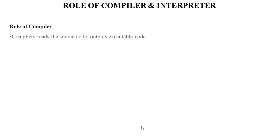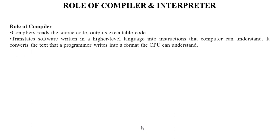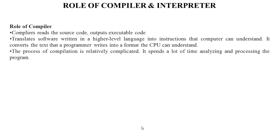The role of a compiler: the compiler reads the source code and outputs executable code. The executable result is some form of machine-specific binary code. It translates software written in a higher-level language into instructions that a computer can understand, that is low-level language. It converts the text that a programmer writes into a format the CPU can understand. The process of compilation is relatively complicated and it spends a lot of time analyzing and processing the program.